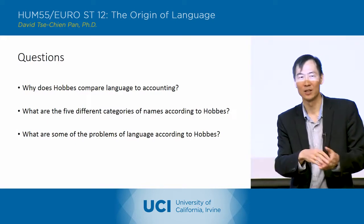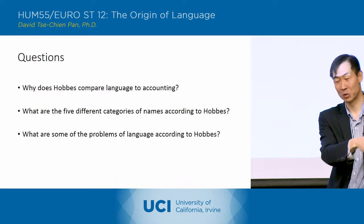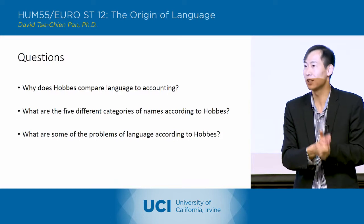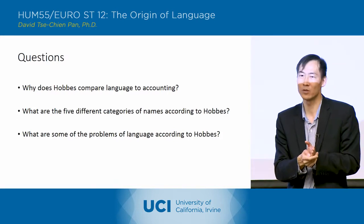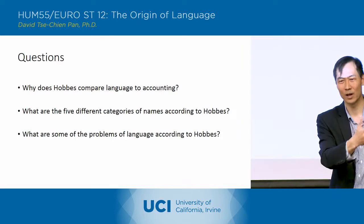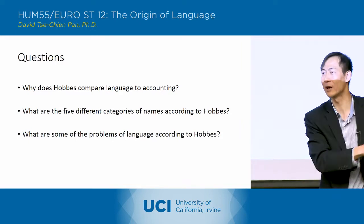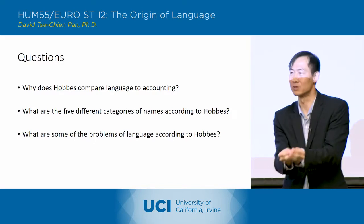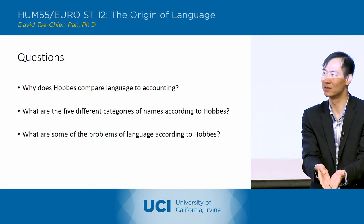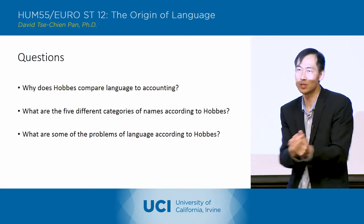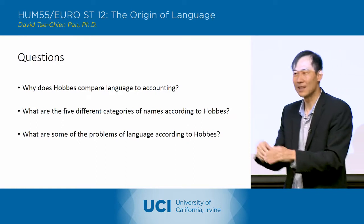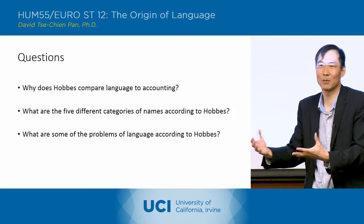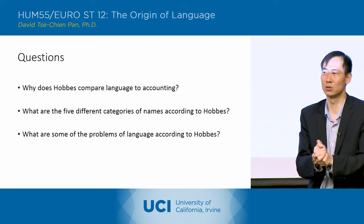With accounting, for instance, if you have a number somewhere - say 25 in your accounting books - it's a number, but it's also representing a thing in the world. So it might be that 25 represents 25 Toyota Camrys sitting in a warehouse. Those 25 Toyota Camrys reduce to a number: inventory, 25. So you've reduced something in the world into a number, and that's the same process he's talking about with language.